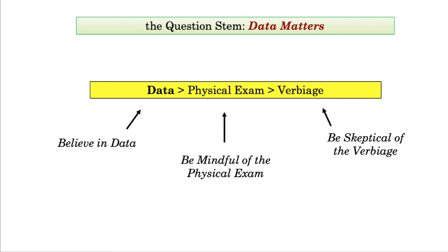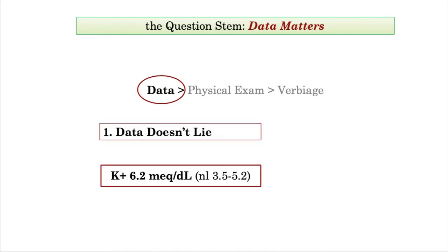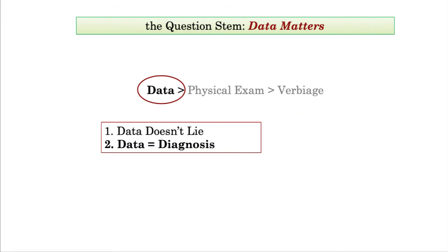Circling back to data, there are two key take-homes. The question writer can't lie or mislead with data. It is factual content. If they give you a high potassium, then the patient has high potassium. That is unambiguous. In this example, the differential diagnosis of hyperkalemia becomes an invariable component of your problem solving. That is, no matter what else is included in the remainder of the question stem, your answer will have to account for the presence of hyperkalemia. Point two is that data generates diagnoses.